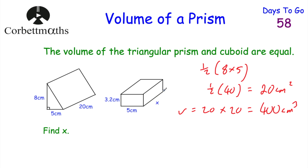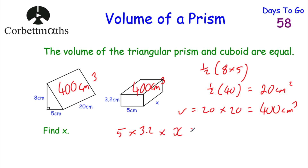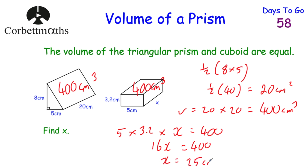Now we need to find the length of the cuboid. The volumes are equal, so the cuboid's volume is also 400 centimetres cubed. For the cuboid: length × width × height = 3.2 × 5 × x = 400. So 16x = 400, and dividing both sides by 16 gives x = 25. The length of the cuboid is 25 centimetres.